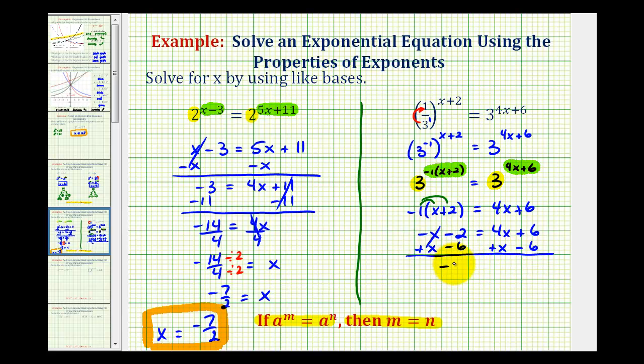This would be 0, this would be negative 8, this would be 4x plus x which is 5x, and this is also 0. Now we'll divide both sides by 5. So we have negative 8 fifths equals x.